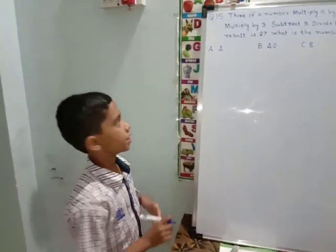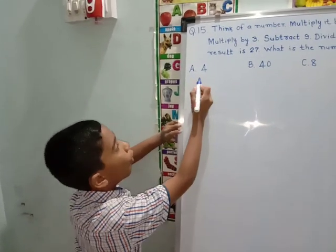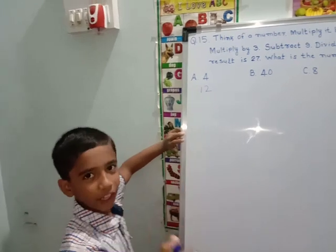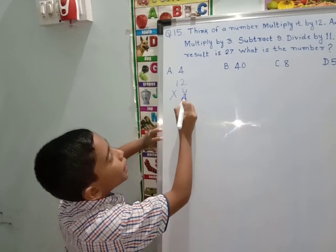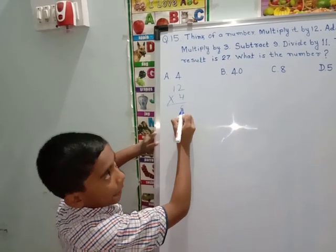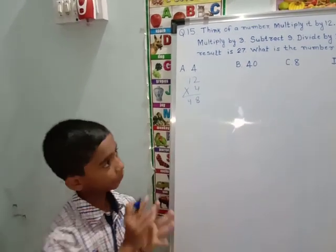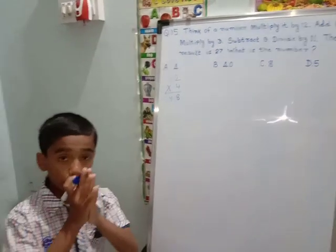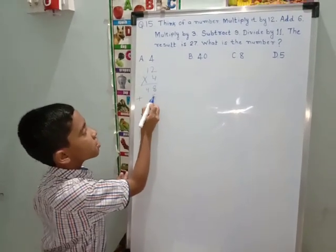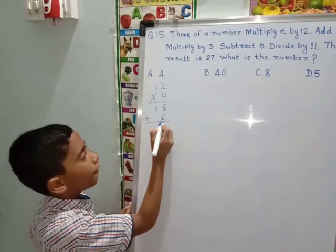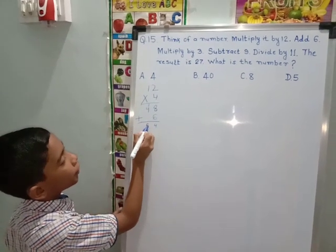The first option is 4. We multiply 4 by 12: write the bigger number in front, 12 multiplied by 4. We get 48. Now we add 6 to get 54.